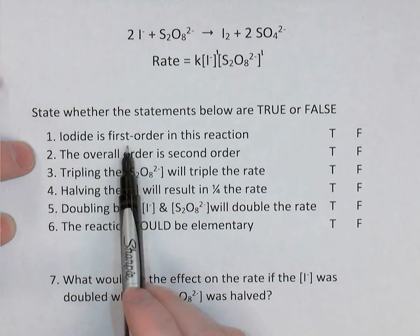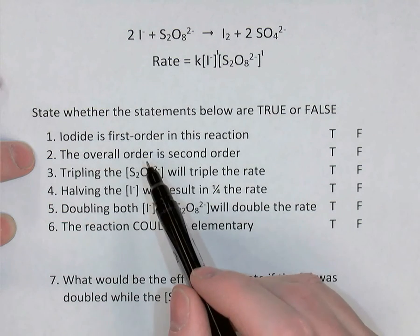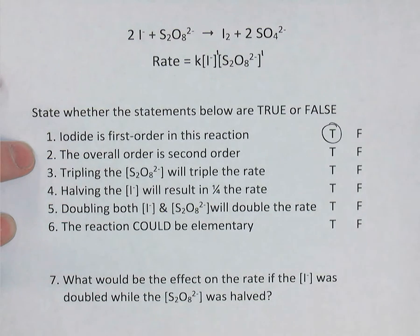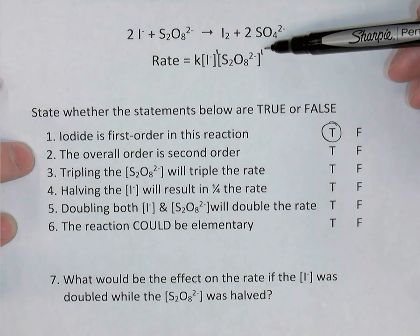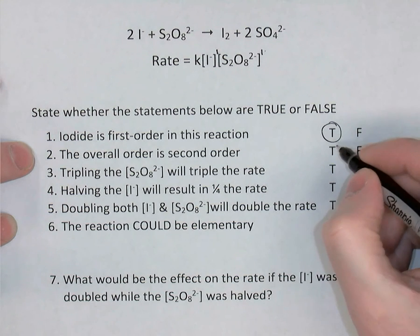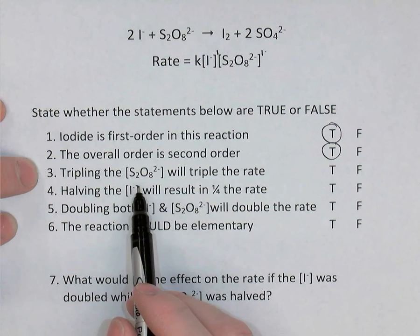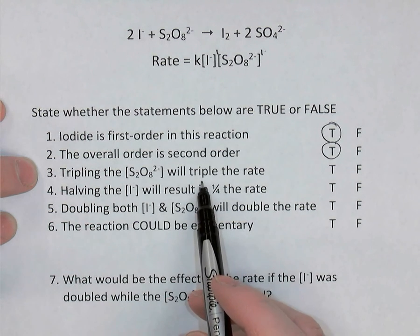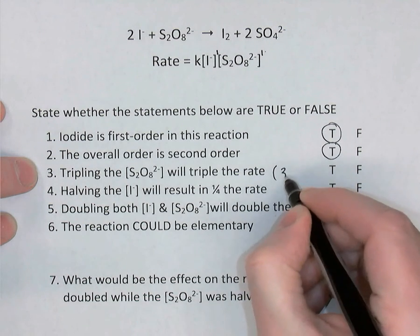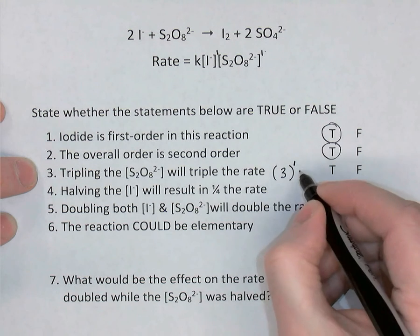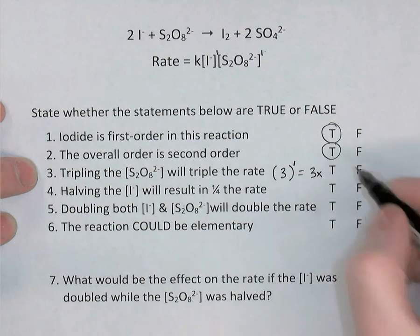True or false: iodide is first order in the reaction? Iodide's exponent in the rate law is 1 — true. Is the overall order second order? The overall order is the sum of the orders: 1 plus 1 equals 2 — true. The third statement: tripling the concentration of S₂O₈ would triple the rate. S₂O₈'s order is 1, so tripling its concentration raised to the power of 1 gives 3 times the rate — true.